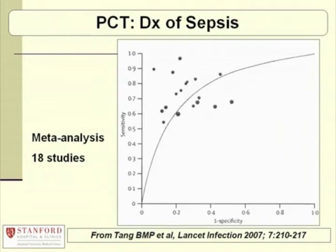The last meta-analysis is a pretty often cited one. It was published in 2007, and they looked at about 300 studies and eventually included about 18. This was in critically ill patients, and it was for the diagnosis of sepsis. The result of this meta-analysis, as far as the authors were concerned, was that procalcitonin was not terribly helpful for the diagnosis of sepsis.